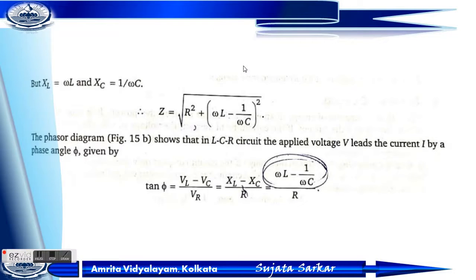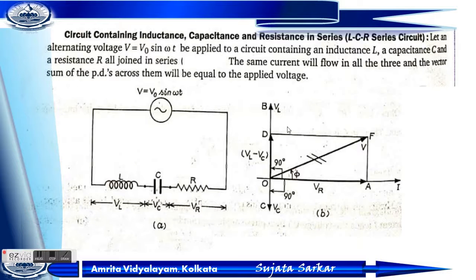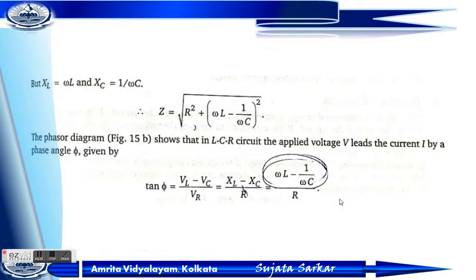This shows the phase diagram of the LCR circuit. The applied voltage V leads the current I by phase angle phi. The phase angle is given by tan phi equals (VL minus VC) by VR. From the diagram, VL minus VC corresponds to the vertical component and VR is the horizontal component. So tan phi equals (XL minus XC) by R.